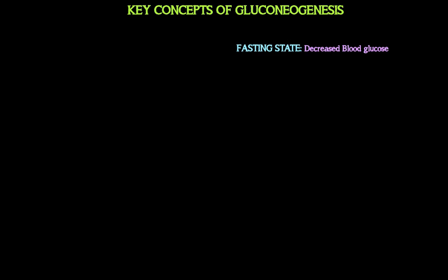What are the key concepts of gluconeogenesis? It occurs in a fasting state, where blood glucose levels are low. That's a problem for certain cells — the brain and erythrocytes — which depend on glucose solely or predominantly as their energy source. The brain will prefer glucose as fuel, except in severe prolonged fasting or starvation, when it will use ketone bodies, which is covered in lipid metabolism.